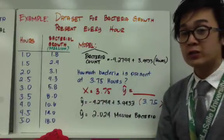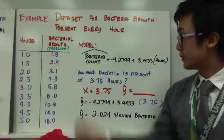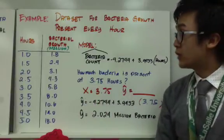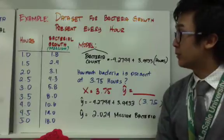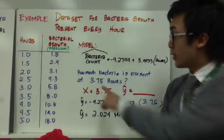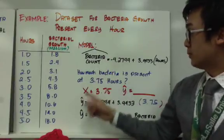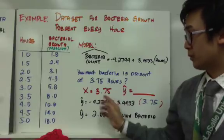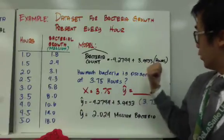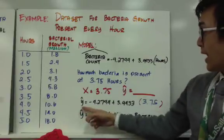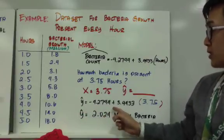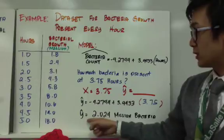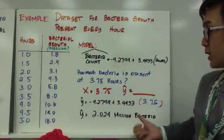Now the question is: how much bacteria is present at 3.75 hours? Given x equals 3.75 as our explanatory variable and plugging it into our model, y-hat equals negative 4.2744 plus 3.9433 times 3.75. We get a y-hat equal to 2.024 million bacteria. So the bacteria present at 3.75 hours is predicted to be 2.024 million.